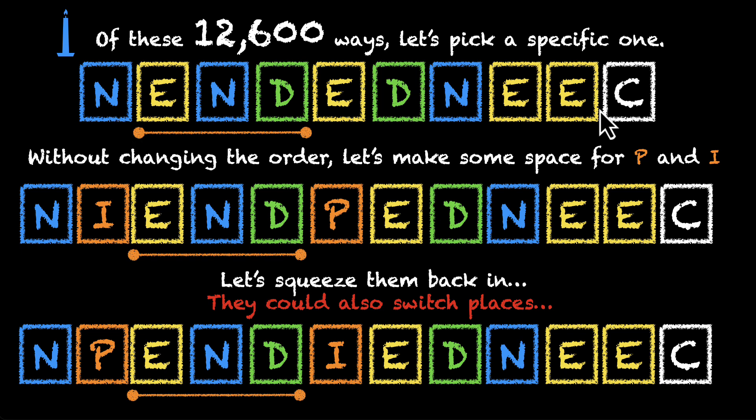So what should we do next? Let's stay with this specific arrangement for a little bit longer. Only focusing on this arrangement, in how many ways can we make space for P and I? So a smaller, simpler, solvable question is, for this arrangement, what are the number of ways to make some space for P and I? Think about it.